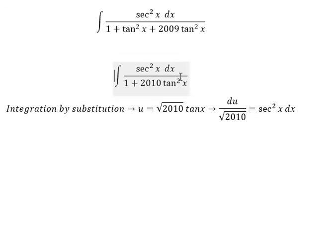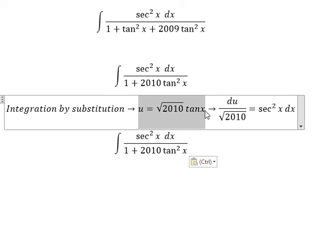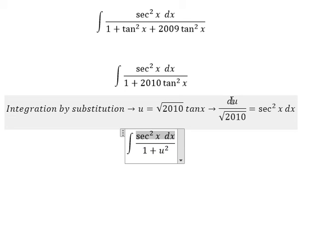And now we need to change this integral. We have this to change, so you get u squared. We change for this one.